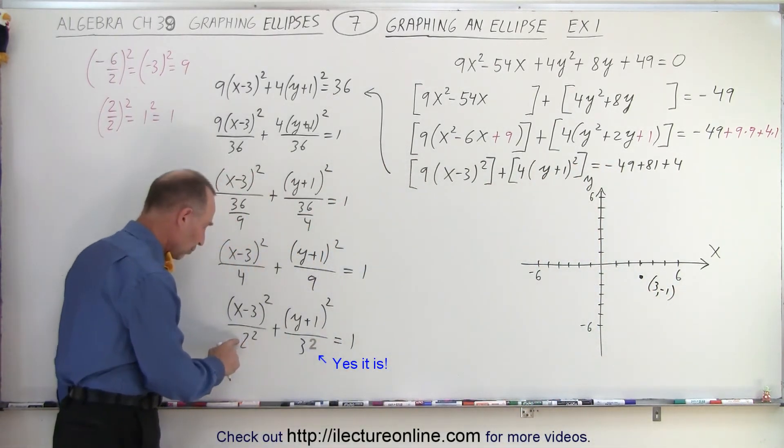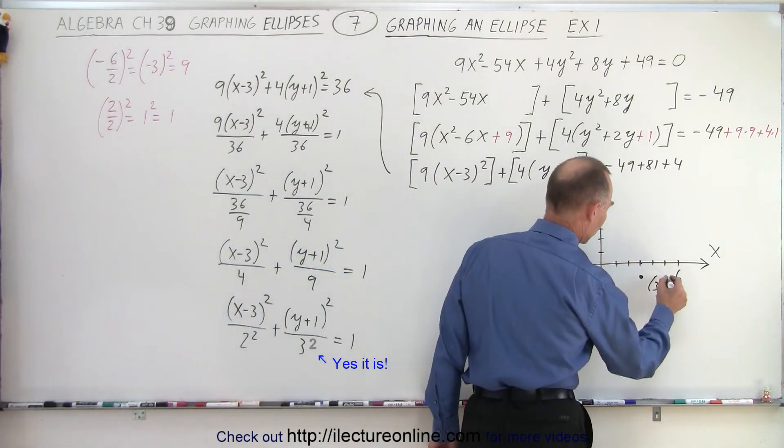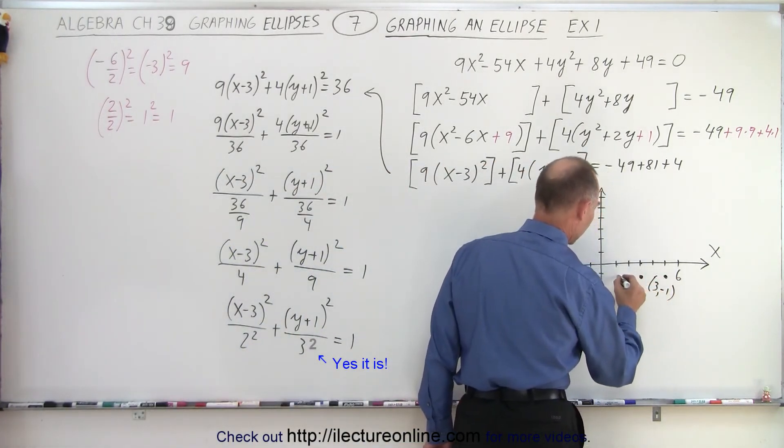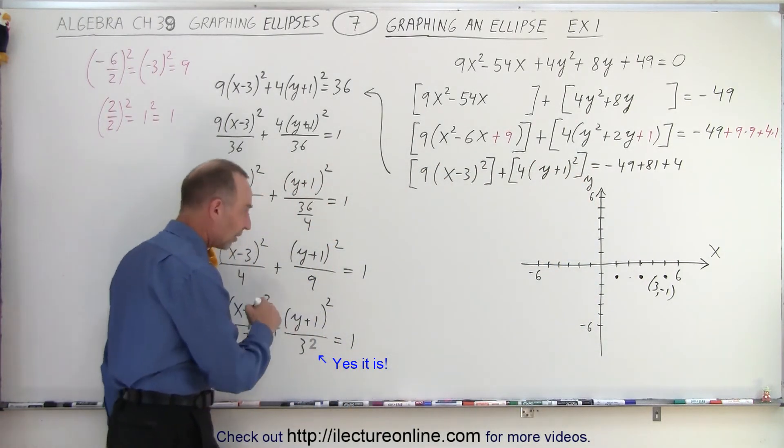In the x direction, we're going to move to the right and to the left two units. So to the right 1, 2, to the left 1, 2.